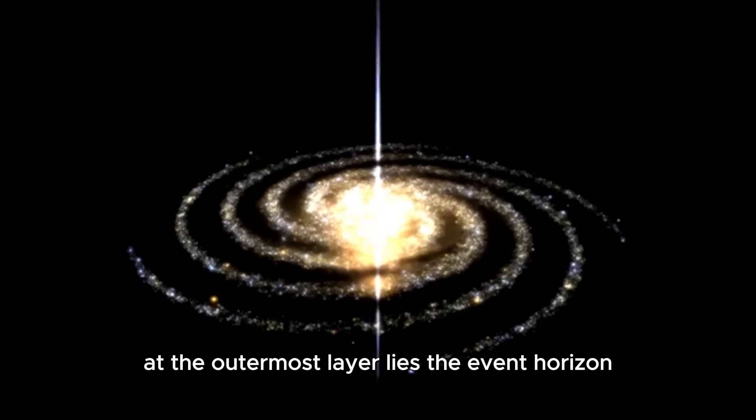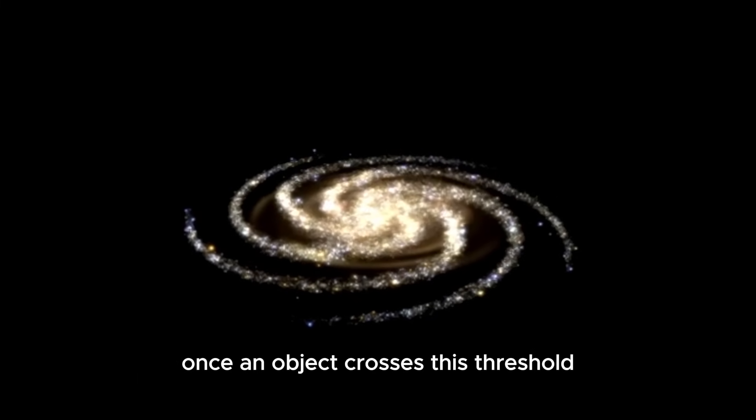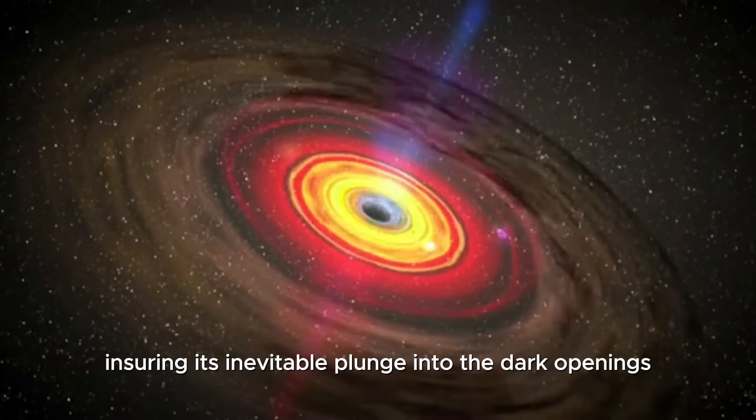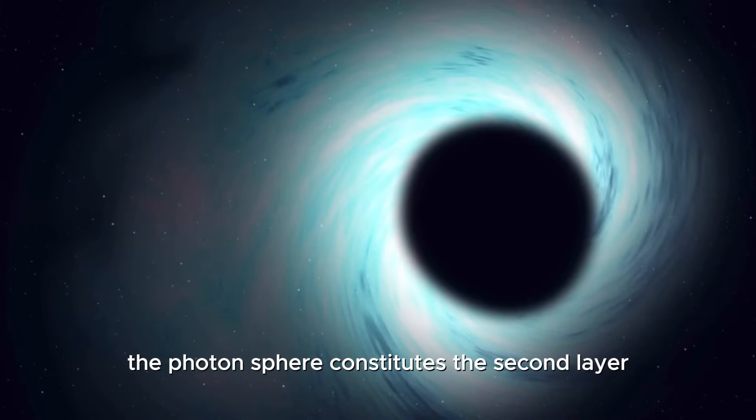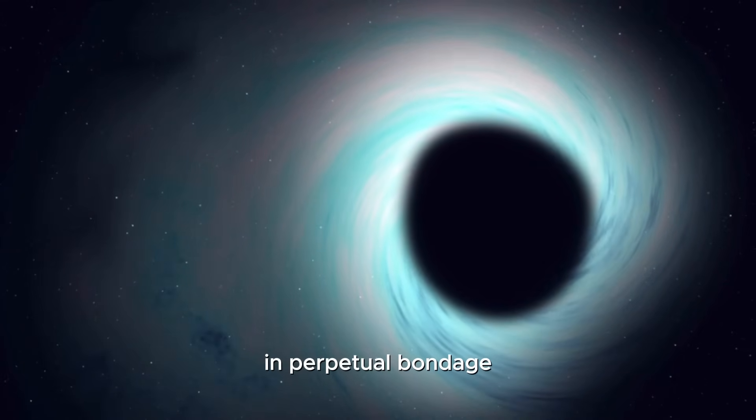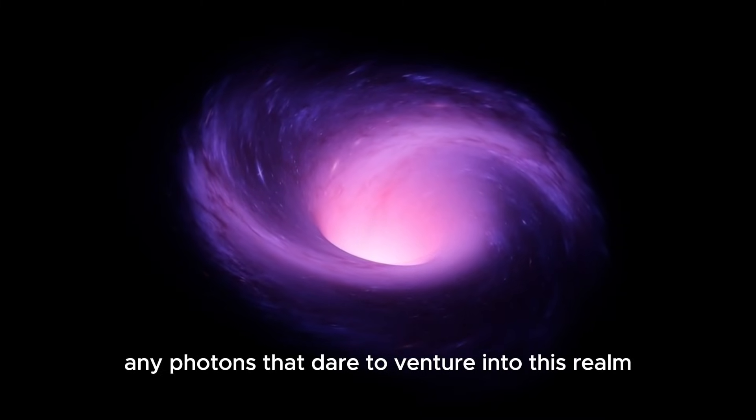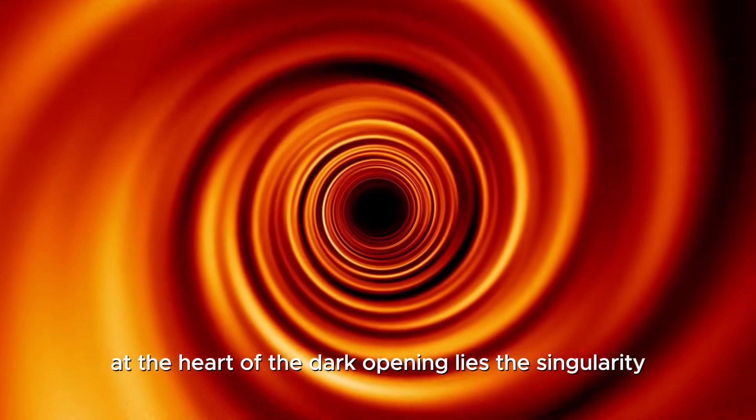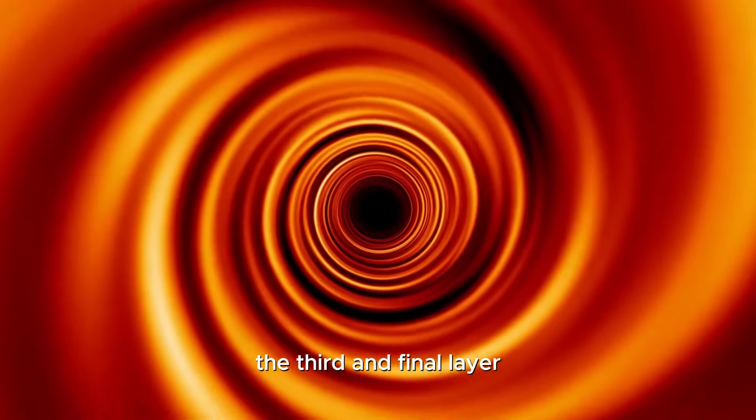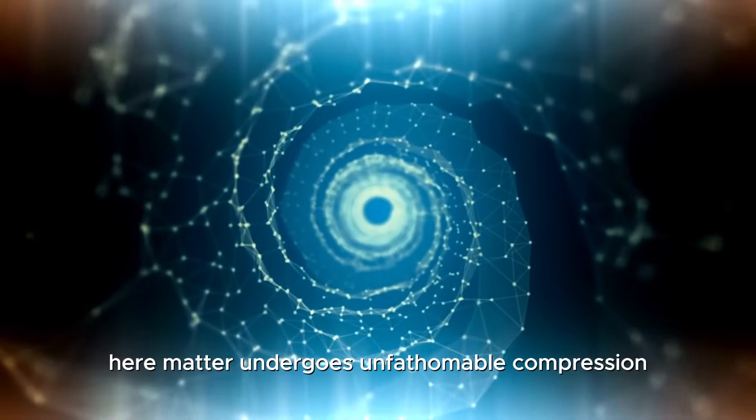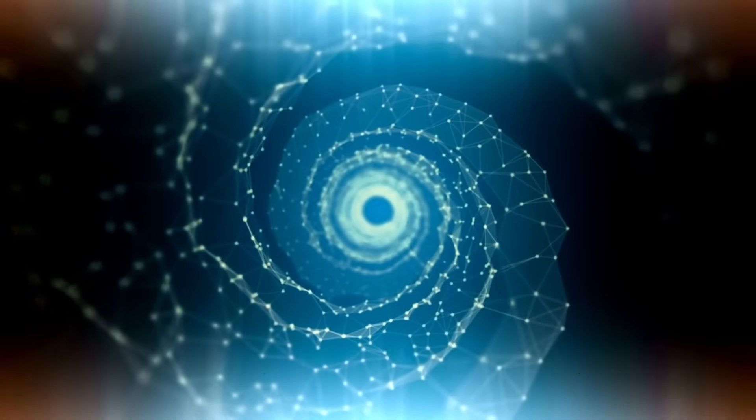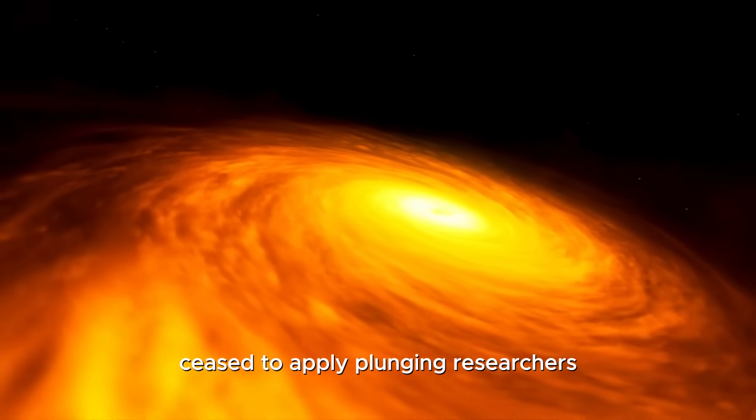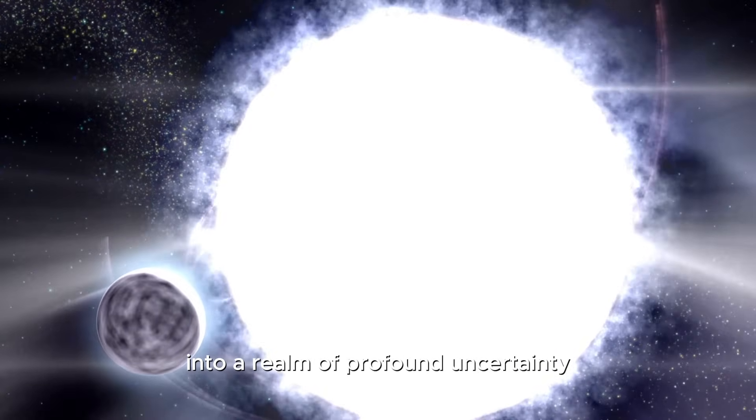At the outermost layer lies the event horizon, a critical boundary marking the point of no return. Once an object crosses this threshold, gravitational forces become insurmountable, ensuring its inevitable plunge into the dark openings' depths. Moving inward, the photon sphere constitutes the second layer, where light orbits the dark opening in perpetual bondage. Any photons that dare to venture into this realm succumb to the overwhelming gravitational pull, trapped forever within the cosmic embrace of the dark opening. At the heart of the dark opening lies the singularity, the third and final layer, where the laws of physics reach their ultimate limits. Here, matter undergoes unfathomable compression, collapsing into a point of infinite density. It is within this enigmatic singularity that the familiar laws governing the universe cease to apply, plunging researchers into a realm of profound uncertainty and theoretical speculation.